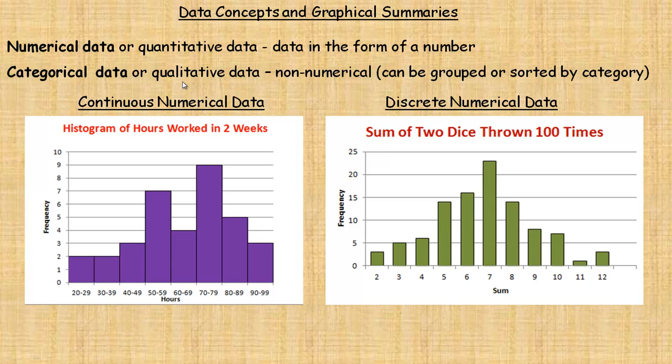Now, categorical data, or qualitative data, is non-numerical. And it can be grouped or sorted by some category.